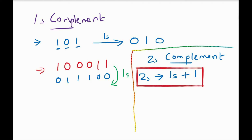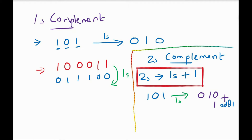We will take an example. Consider the number 1, 0, 1 which we have already taken for finding 1's complement. So what is the 2's complement? First find the 1's complement — 1's complement of 1, 0, 1 is 0, 1, 0. Now add 1 to the result. 0 plus 1 is 1, and the other bits remain, giving us 0, 1, 1. So this is the 2's complement of 1, 0, 1 — that is 0, 1, 1.